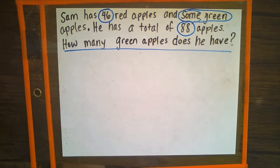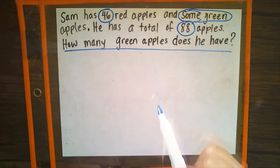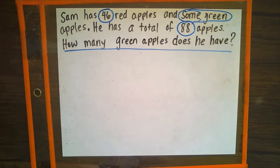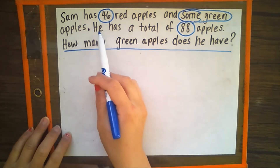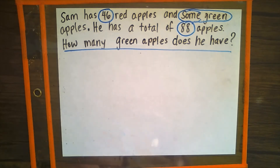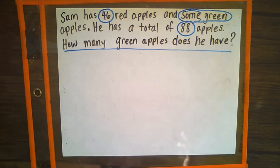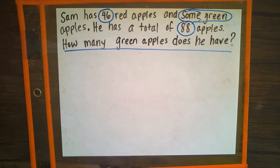Now, my friends, now that we've underlined our question, I want you to think to yourself: are they asking us to solve for the part or the whole? Tell a friend or family member and then we will talk about it together as a team. Welcome back, my friends. If you were thinking that they are asking us to solve for a part, you are correct, because in this second sentence they told us that Sam has a total of 88 apples — that's the whole. We are not solving for the whole; we know we are solving for the part because they already gave us the whole. For this problem, we are going to use our tape diagrams.